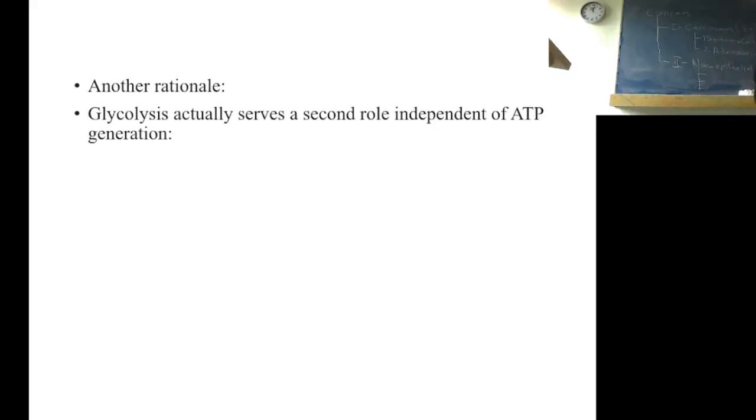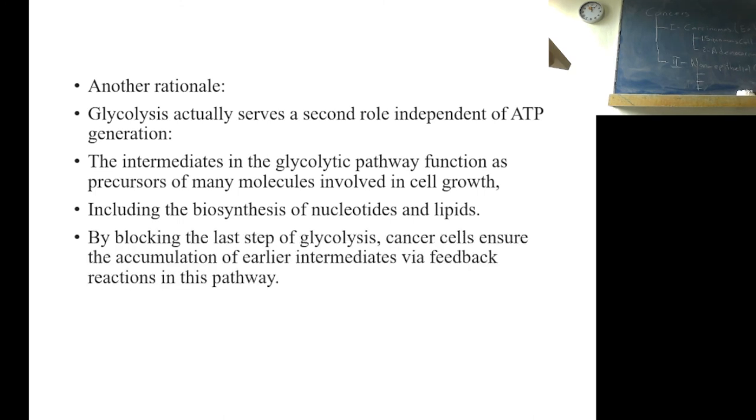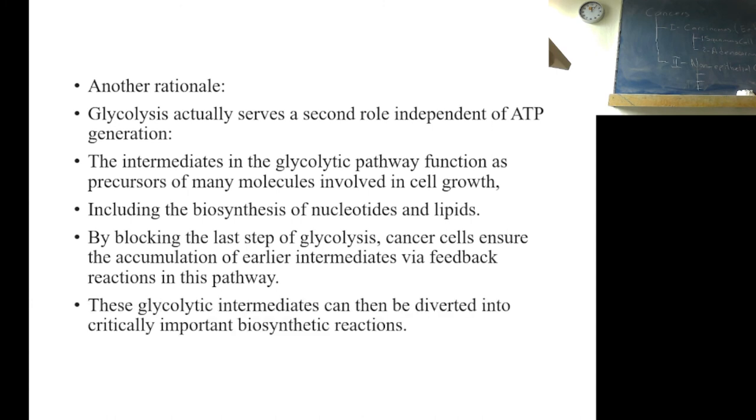Another rationale: glycolysis actually serves a second role independent of ATP generation. The intermediates in the glycolytic pathway function as precursors of many other cellular pathways. For example, production of many other molecules involved in cell growth, including biosynthesis of nucleic acids and lipids. By blocking the last step of glycolysis, cancer cells ensure the accumulation of earlier intermediates via feedback reactions in this pathway. These glycolytic intermediates can then be diverted into critical important biosynthetic reactions.